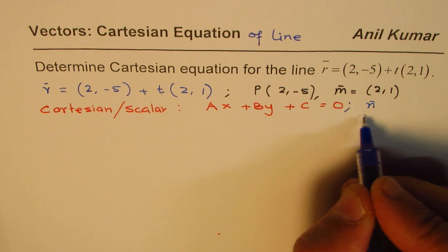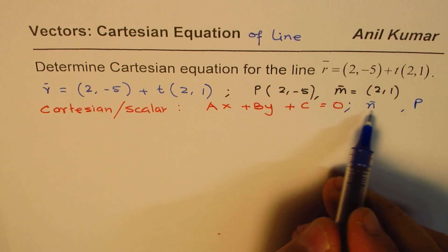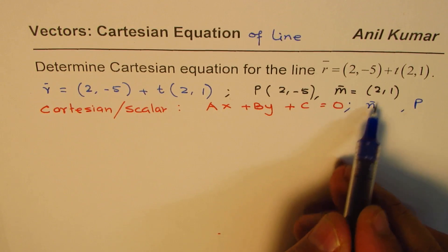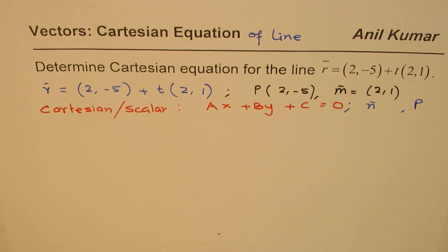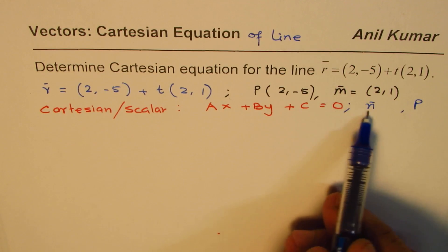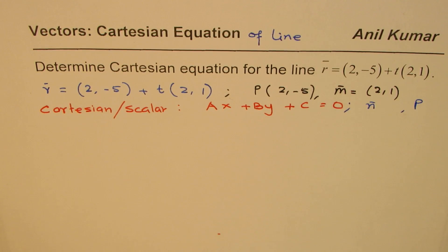In this form, we need to know what the normal is, and a point. Point is known to us, but we don't know what normal is. Since we know the direction, we can find the normal. So let's begin solving.